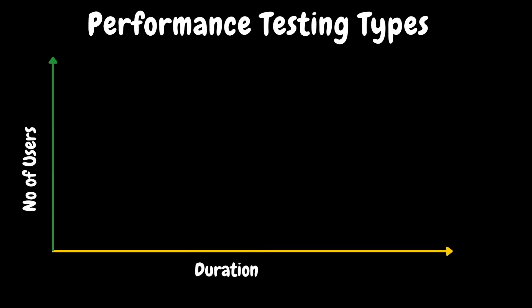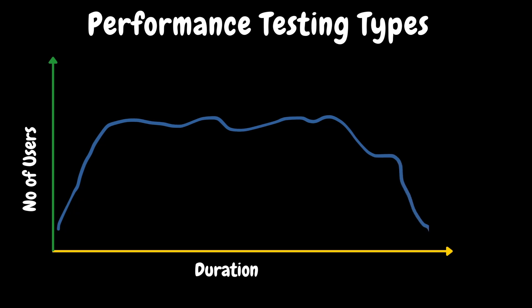Let's quickly understand the application traffic pattern on any given day. The x-axis represents the duration — let's assume data is captured for 24 hours — and the y-axis represents the number of users active in the system. As the day progresses, users slowly start using the application. Not all users are using it from the beginning — maybe 10 users started at 6 AM, another 10 joined at 8 AM, then 100 joined at 8:30 AM, and so on. After some point, the number of users becomes somewhat flat. At the end of the day, users exit gradually. We can see a similar pattern for most web applications.